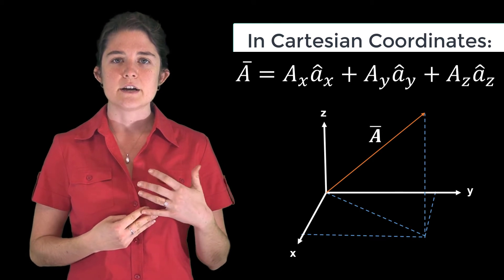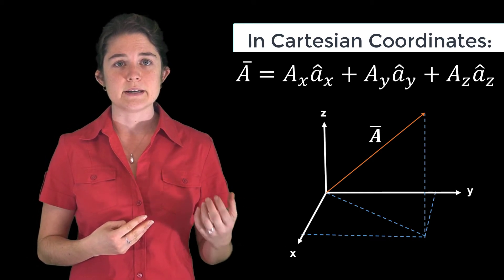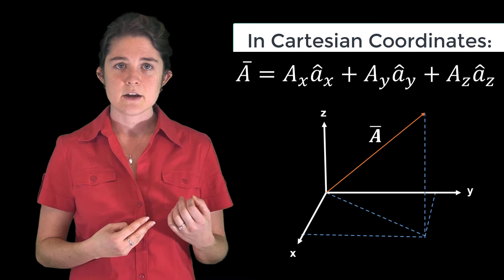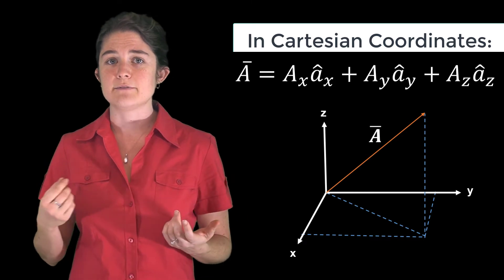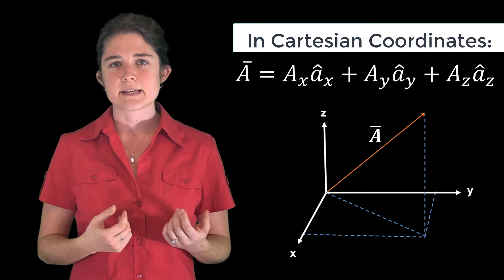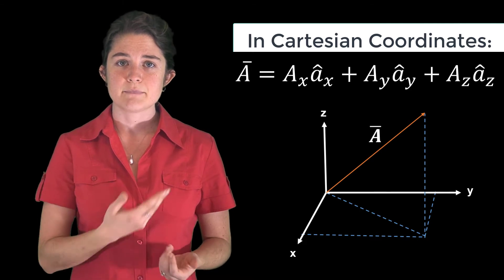In other words, a general vector A may be written as some scalar times the unit vector ax plus some scalar times the unit vector ay plus some scalar times the unit vector az, like this.